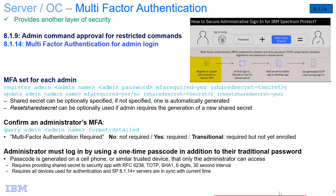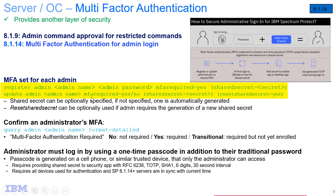This diagram covers how MFA works with Spectrum Protect administrators. First, a Spectrum Protect administrator will register or update other administrators to use multi-factor authentication. When that other administrator goes to log on, they will be shown a QR code or a shared secret code in text. They use that to log on to a security app to generate a six-digit token, used in conjunction with their password when logging on to Spectrum Protect. MFA is set up with either the register administrator or update administrator command.